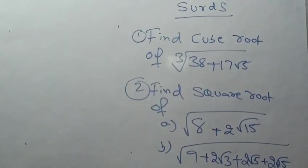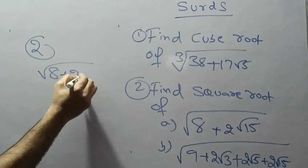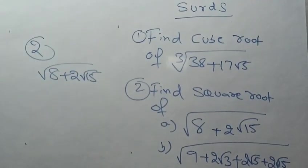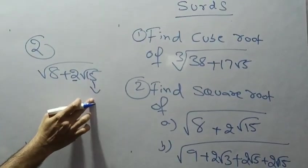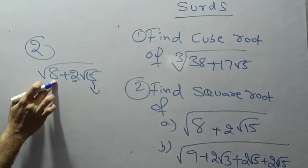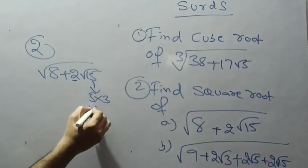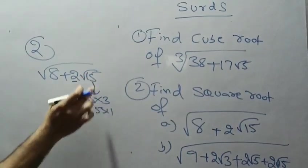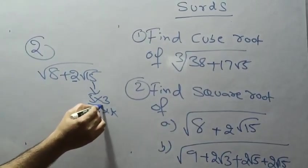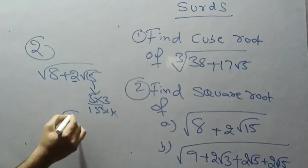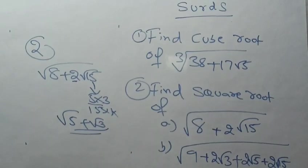Next, the second problem: square root of (8 + 2√15). To apply the shortcut, we find factors of 15 such that their product is 15 and their sum is 8. Trying 15×1: 15+1=16, not 8. Trying 5×3: 5+3=8 and 5×3=15. Hence the answer is √5 + √3.